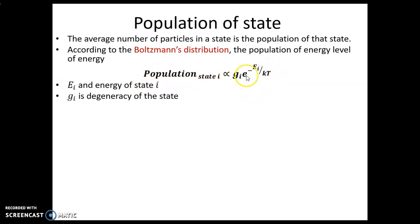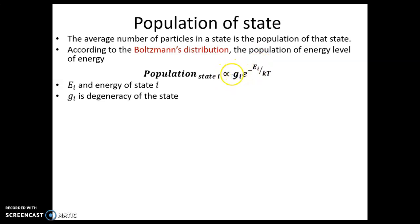The population of states depends on its degeneracy, gᵢ, and its energy level. It also depends on temperature. At absolute zero, all molecules are in the ground state; as you increase temperature, higher states become populated. The lower the energy, the more likely the state will be populated. Degeneracy refers to the number of states that have that same energy — the more states you have, the more room there is for molecules populating those states.